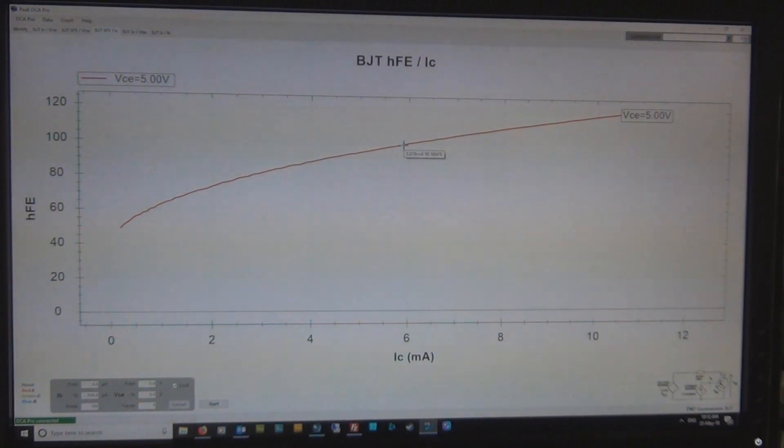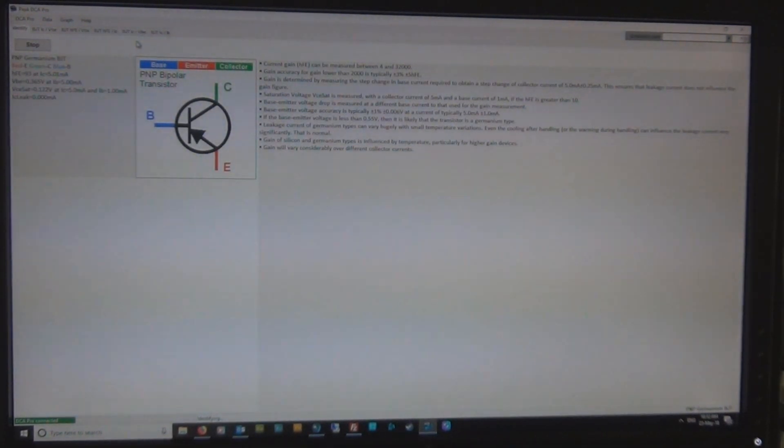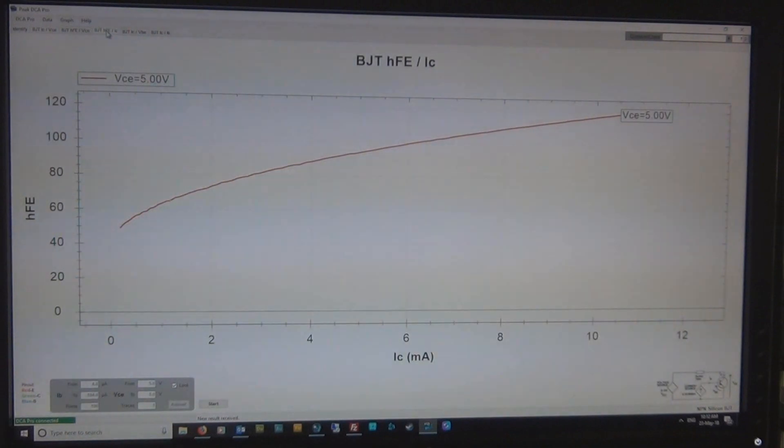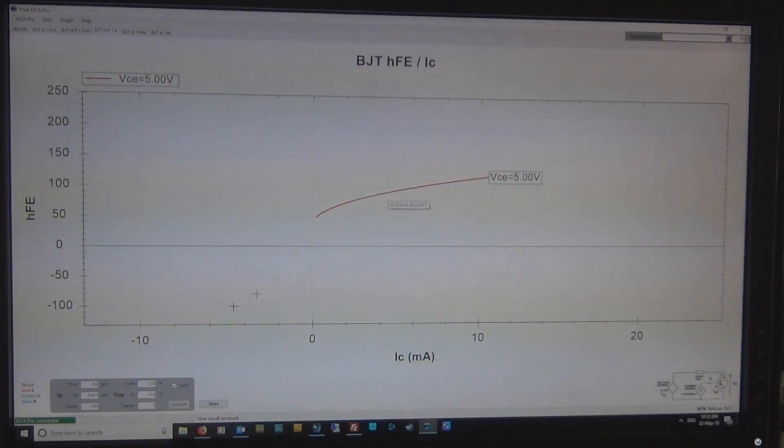So if we do this for, we're just hooking up a 2N3904, which is pretty, it's classified as low gain silicon. And we'll just identify it first. And it tells us, I think last time I did one it was 140, this one's coming up at 202. Collector current of 4.99 milliamp, so 5 milliamp. And then if we do the exact same test, I have to zoom out because it's a high gain transistor and hit start.